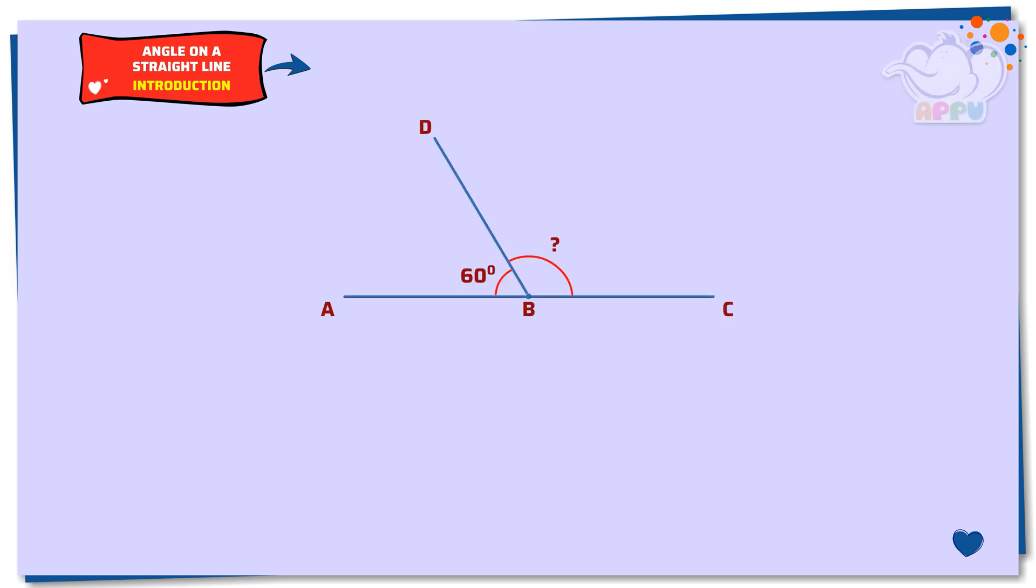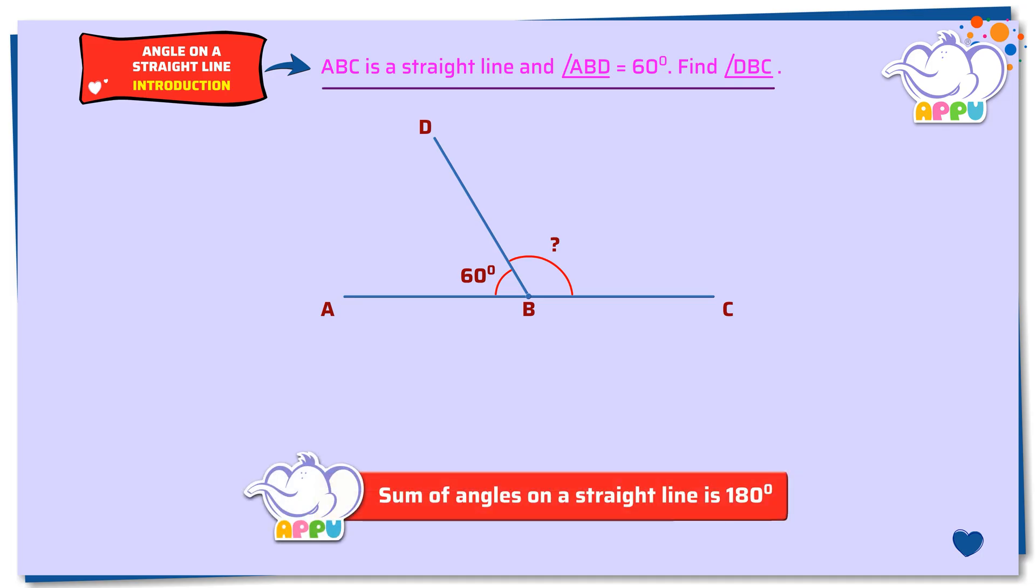In the figure, ABC is a straight line and angle ABD equals 60 degrees. We need to find angle DBC. Here, angle ABD and angle DBC are the angles on the straight line ABC.